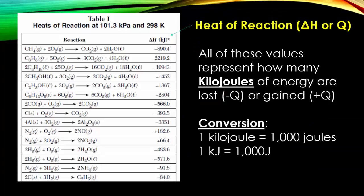If you flip to Table I in your reference tables, you'll see the heat of reactions chart. This chart is going to show you the different values of how many kilojoules of energy are either lost if you have a negative ΔH, or gained if you have a positive ΔH.